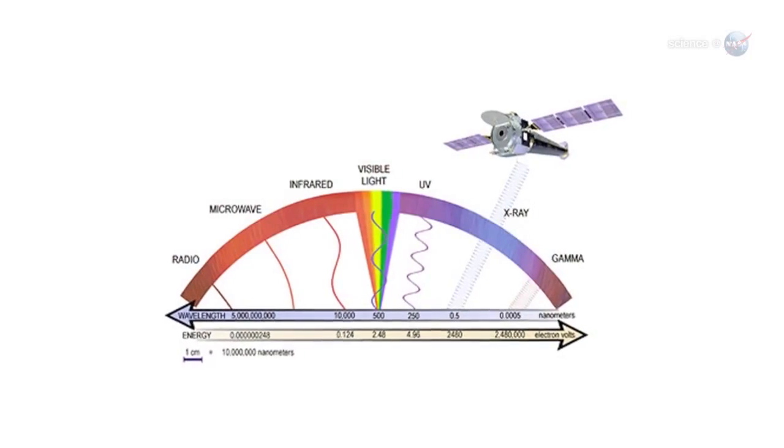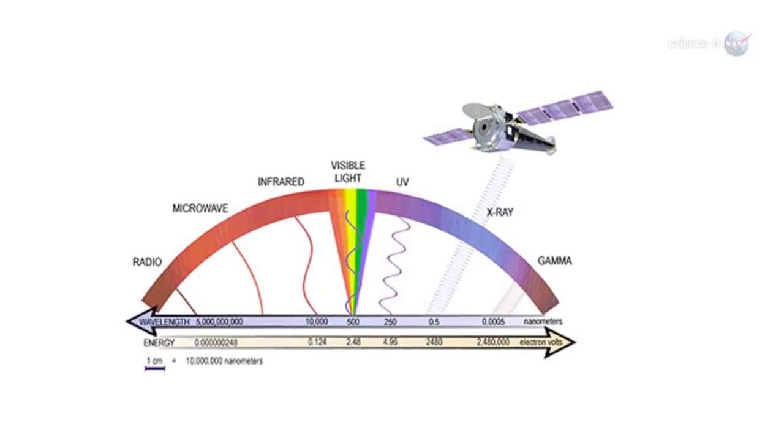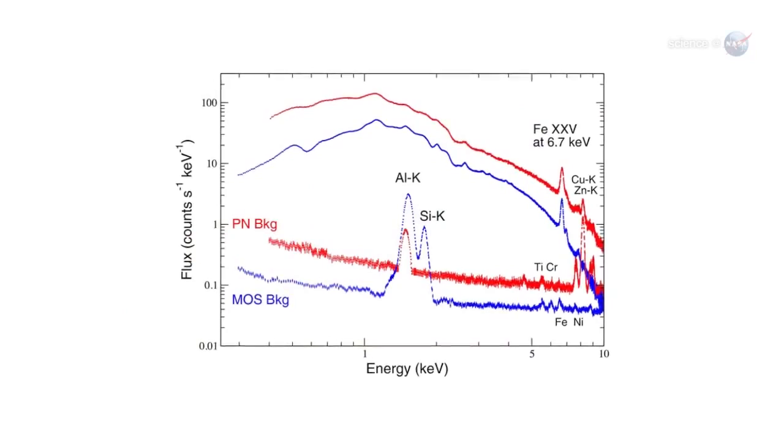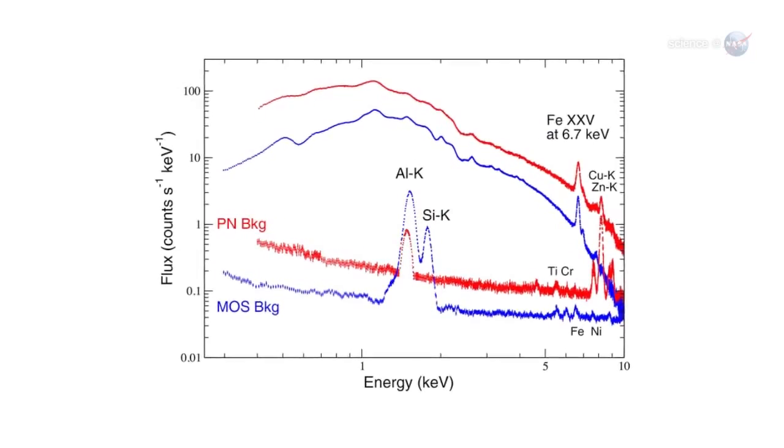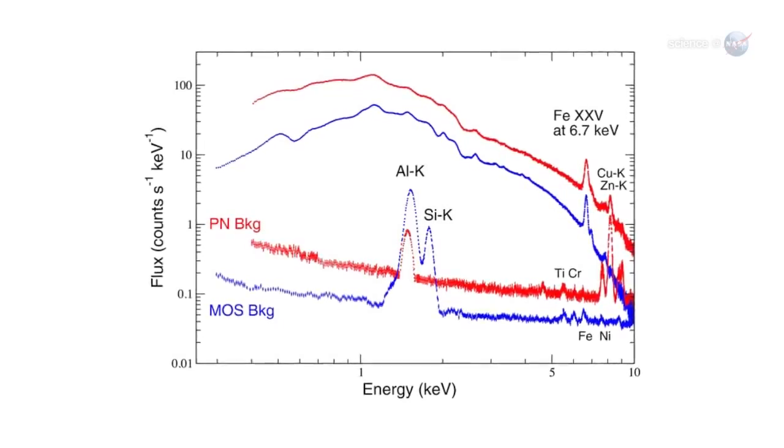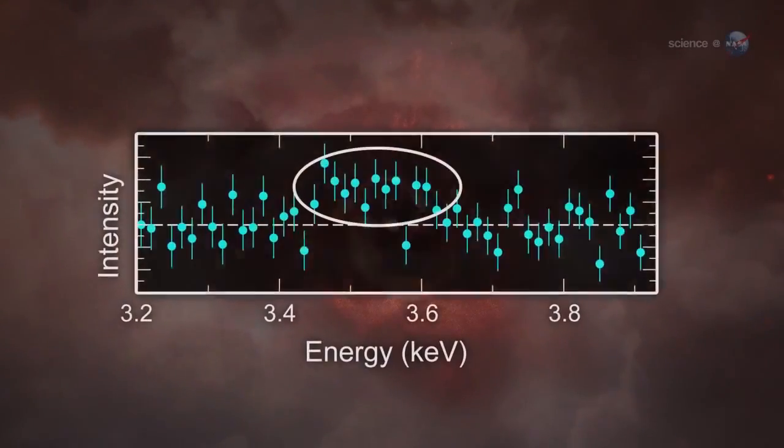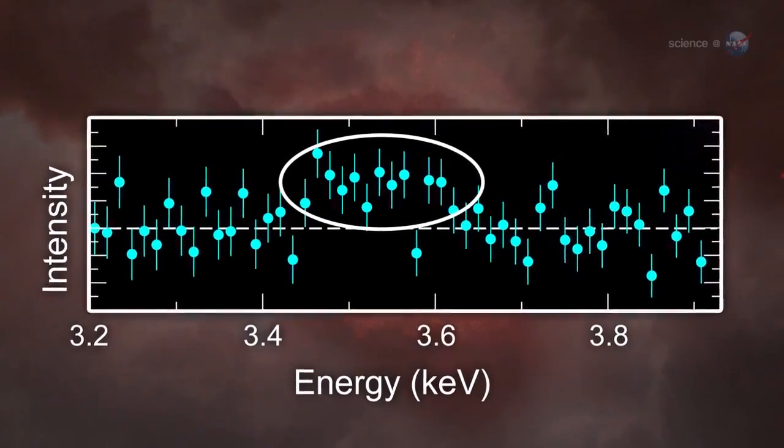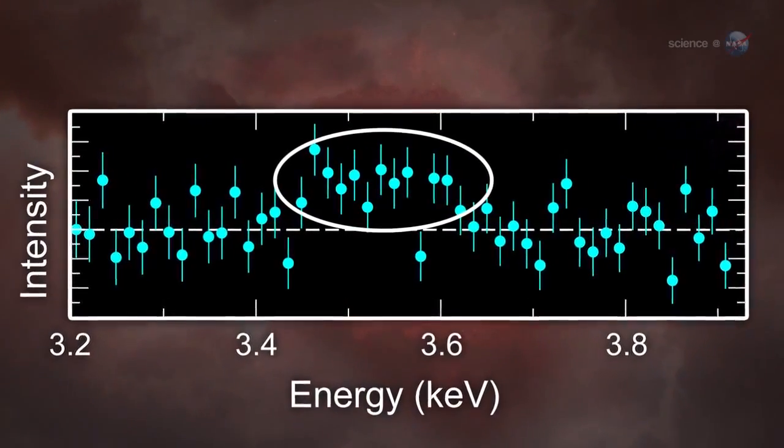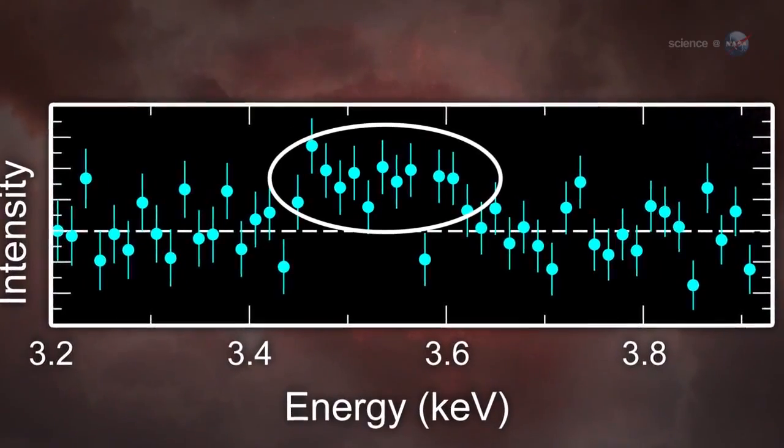Yet in 2012, when Bulbel added together 17 days' worth of Chandra data, a new line popped up where no line should be. A line appeared at 3.56 keV, or kilo-electron-volts, which does not correspond to any known atomic transition, she says. It was a great surprise.